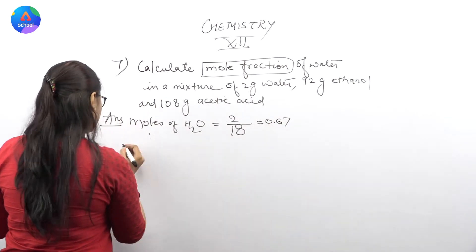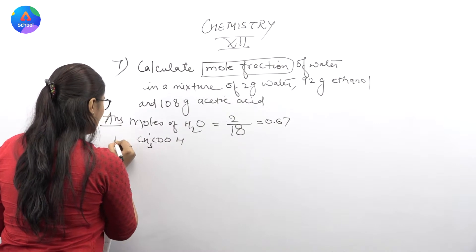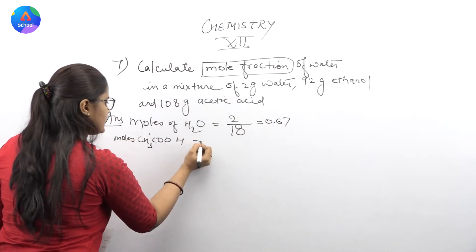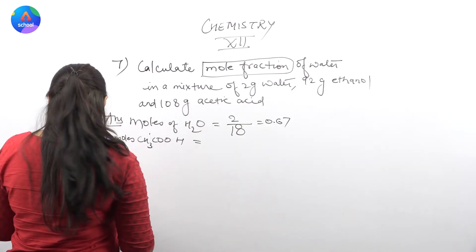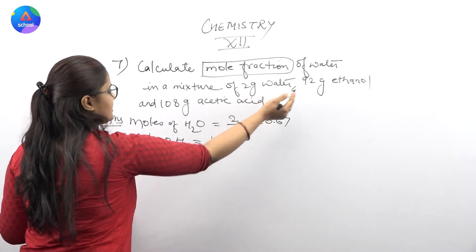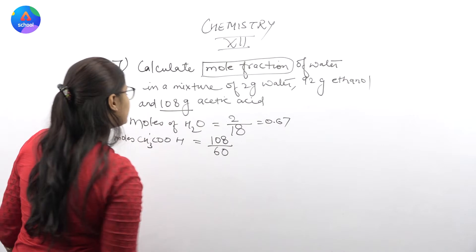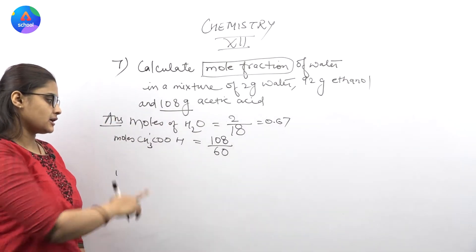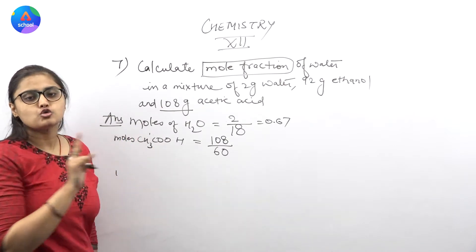Next one is your acetic acid, which I'm writing. Moles are here, so I wrote moles. So it comes out 108 divided by molecular weight. Here, let's see ethanol. And after that, if you calculate acetic acid, it comes out 2 carbon, 4 hydrogen, and 2 oxygen. So it comes out 1.8.